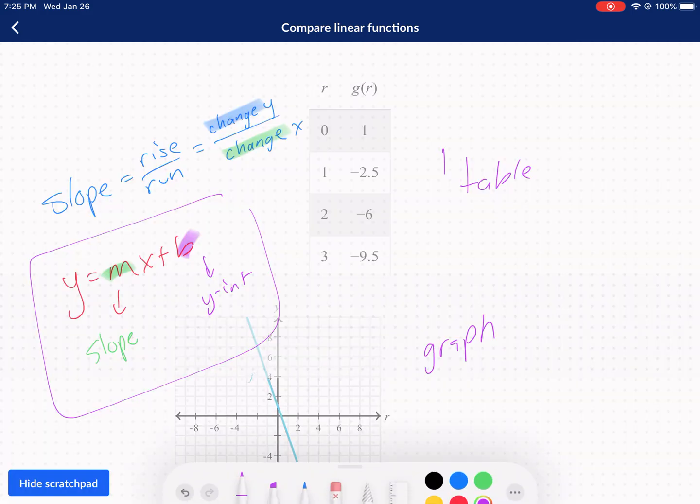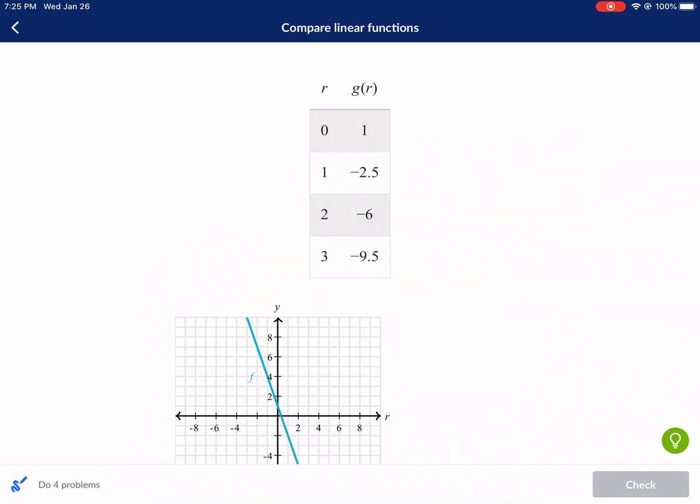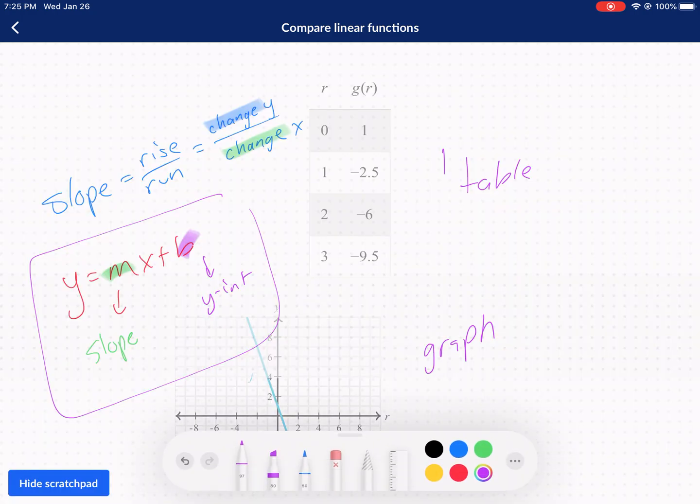So you'll notice that we don't have an equation for either one of these, so how do we figure out what our slope is? Well, slope is defined as the change in Y over the change in X. So we're just gonna see, you'll notice that there's no X here. The X is the independent variable. That's generally, you'll see it being marked up one at a time.